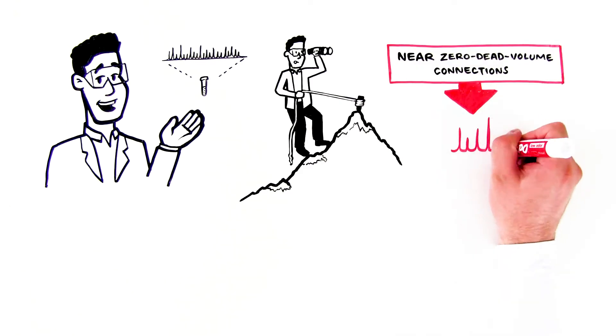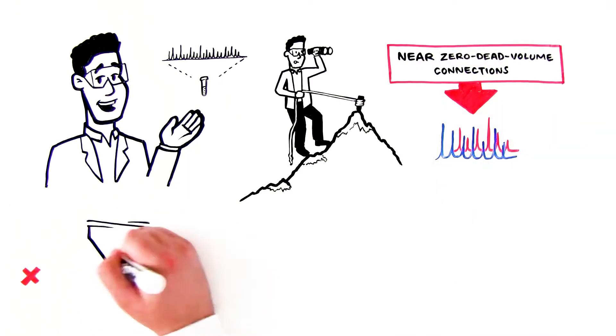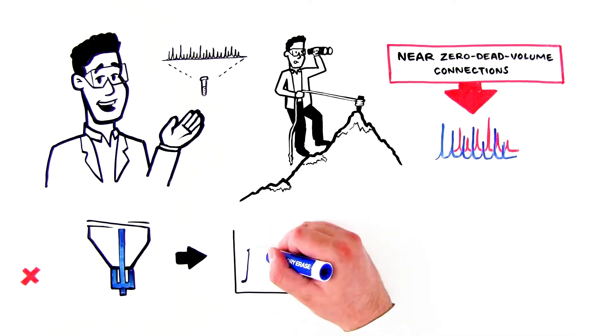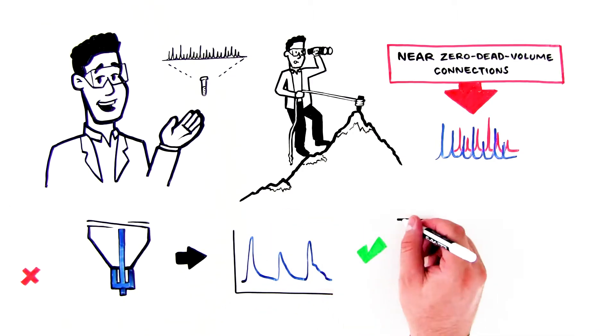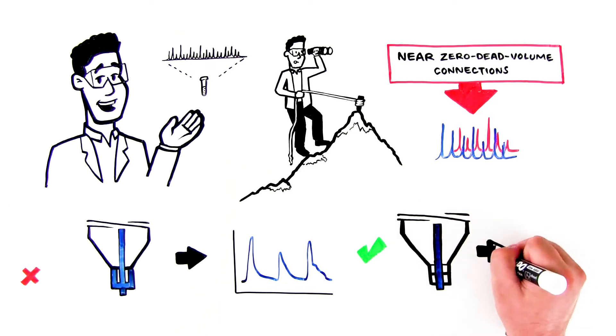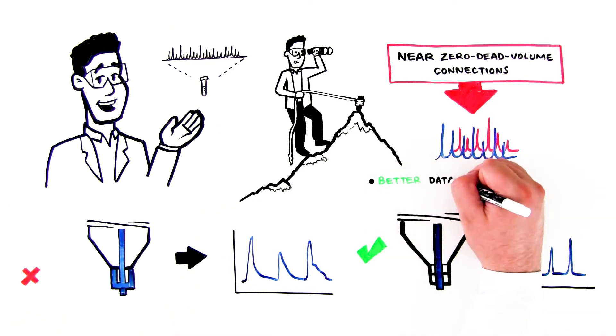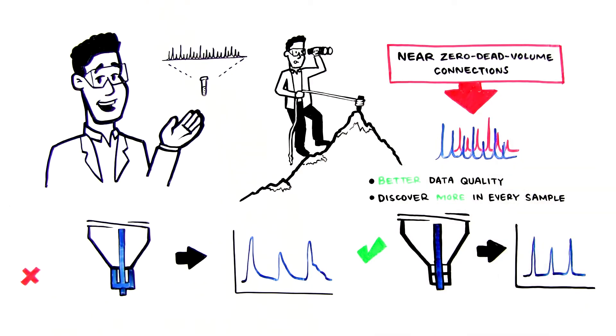Achieving this is critical to attaining high-quality data. Poor connections lead to tailing peaks, which negatively affect the separation of compounds of interest. With better connections, you get more consistent sample coverage, which means better data quality and the ability to discover more in every sample.